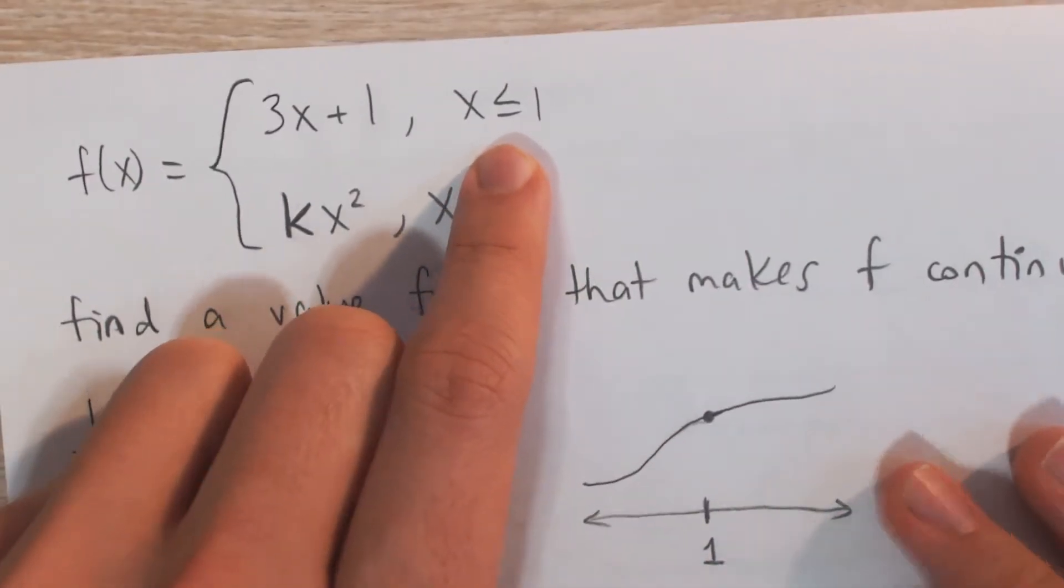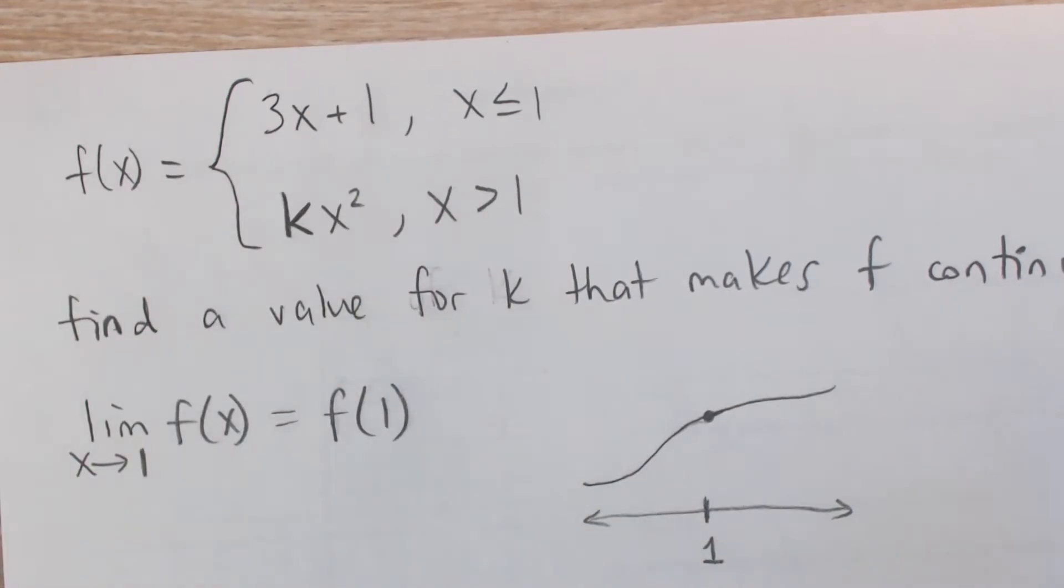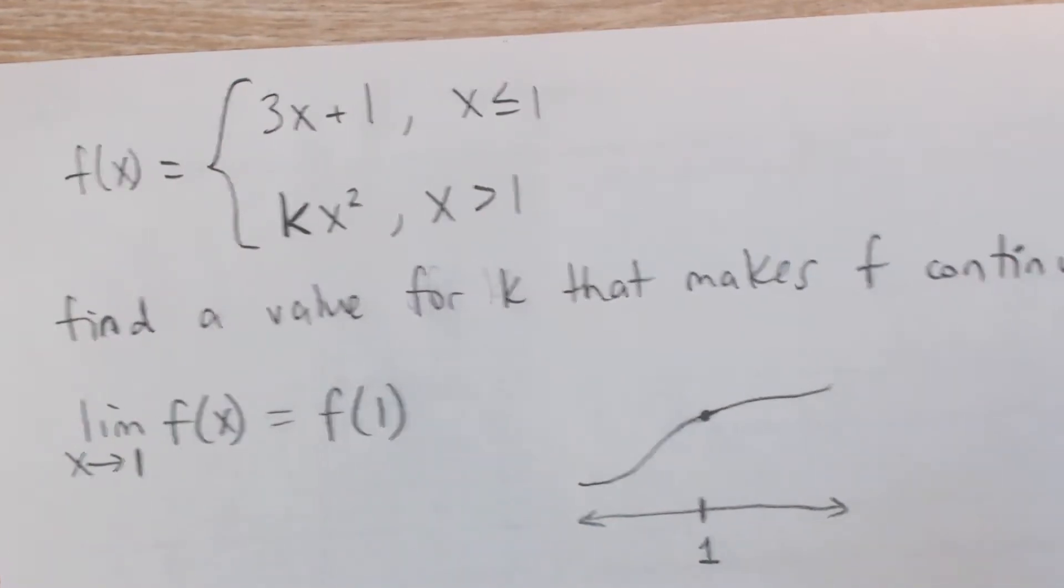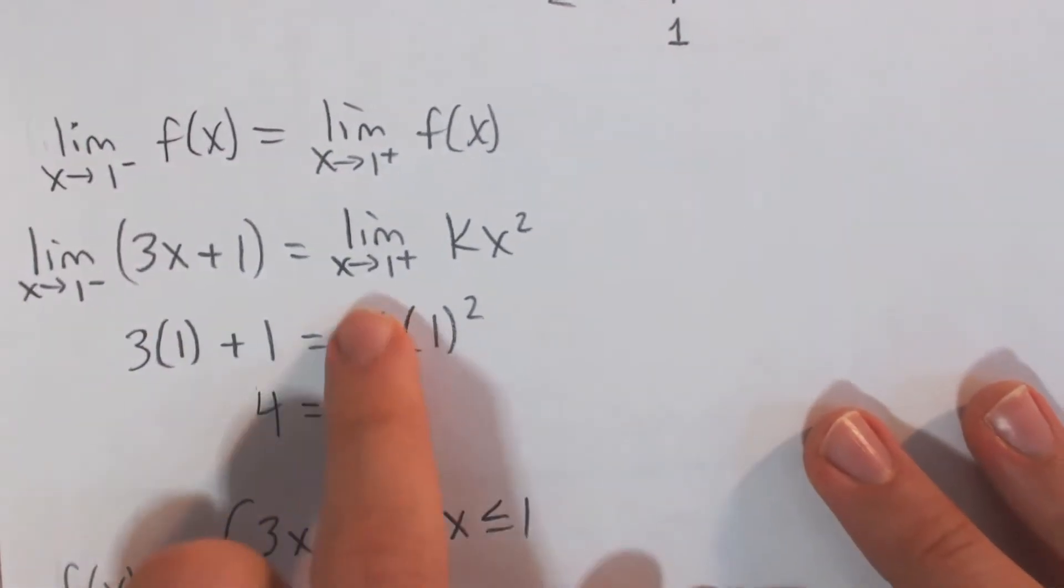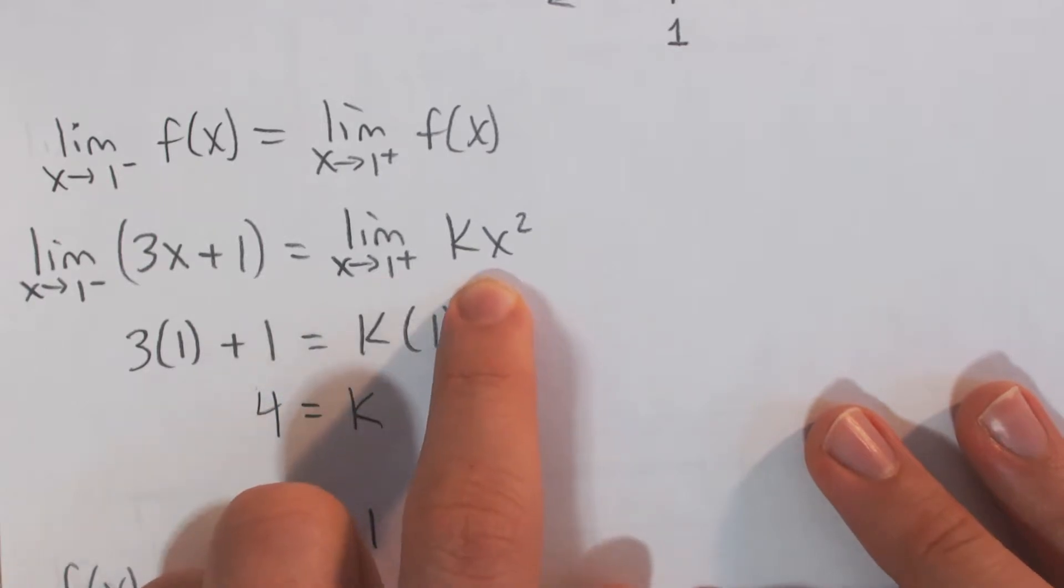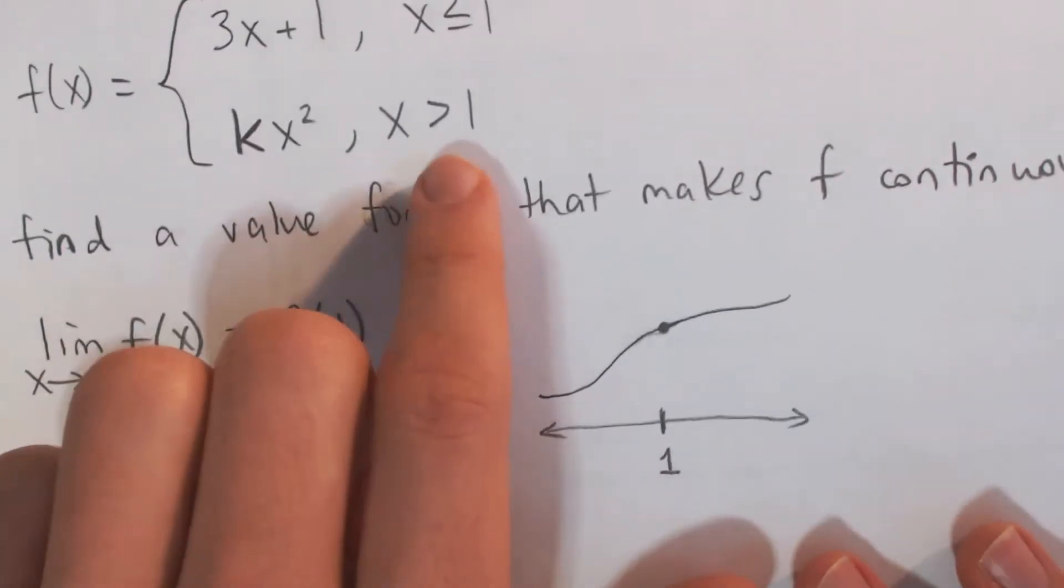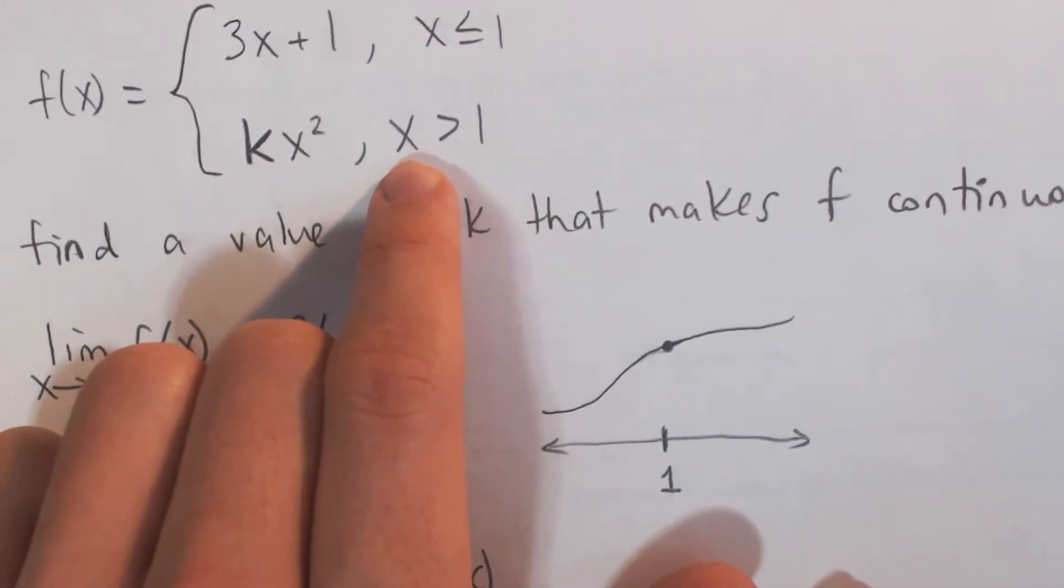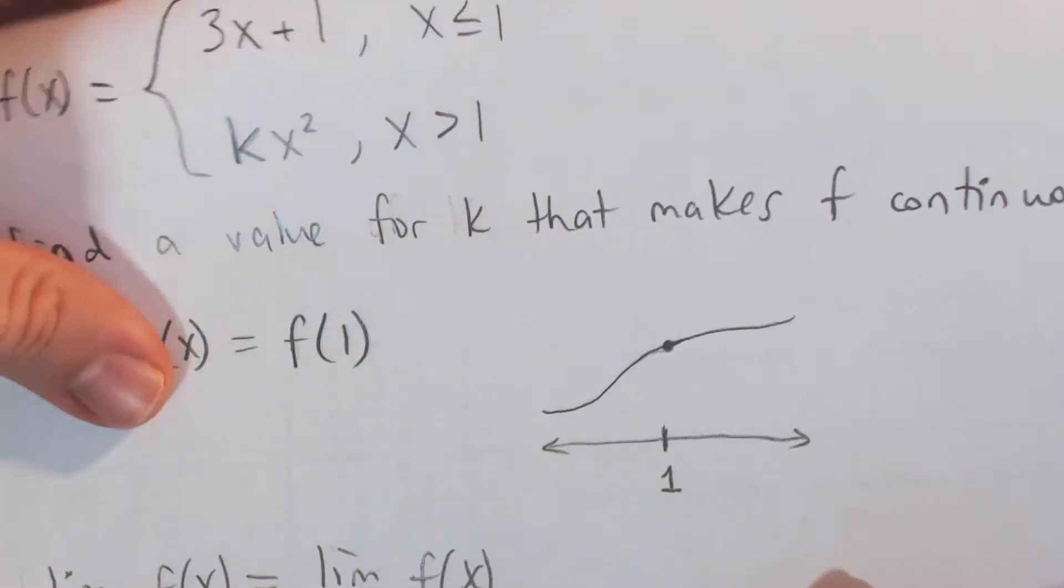And so if it's less than 1, then we're going to use the 3x plus 1 function, and from the right, we're going to use kx squared, because x is slightly greater than 1, and this rule says for x greater than 1, we use this other function.